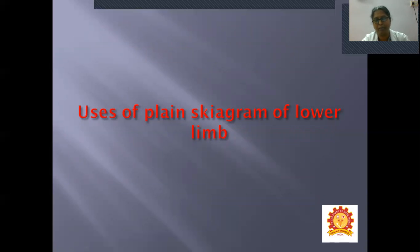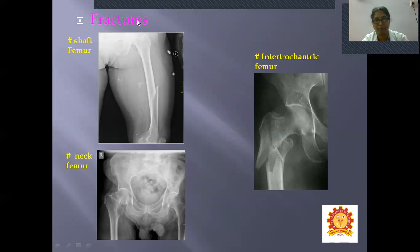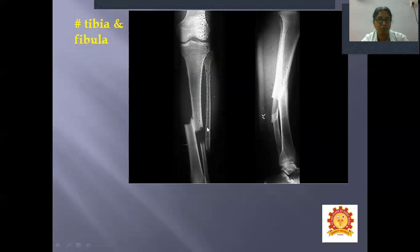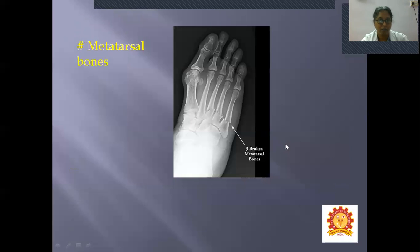Uses of plain X-ray: first, to diagnose or confirm fractures. Examples include fracture of the shaft of the humerus, fracture of the neck of the femur, intertrochanteric fracture of the femur — common in the elderly — fractures of both tibia and fibula with displacement, and fractures of the third, fourth, and fifth metatarsals. Sesamoid bones can be seen at the head of the first metatarsal.